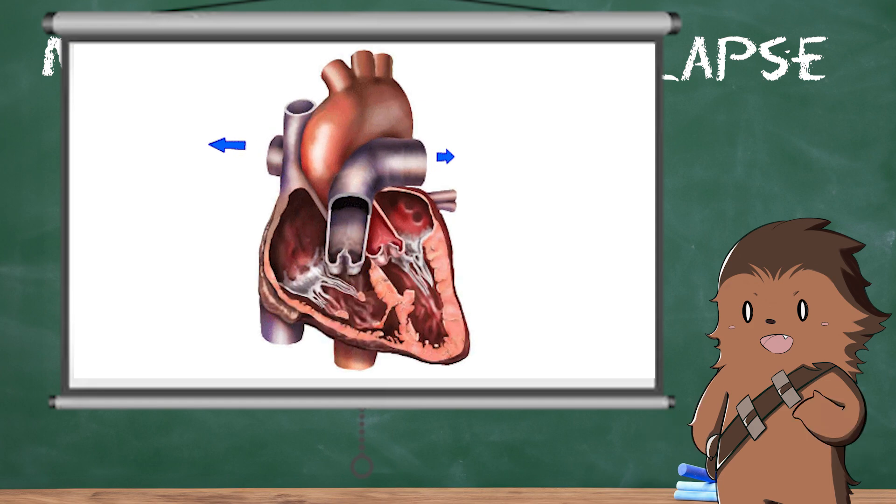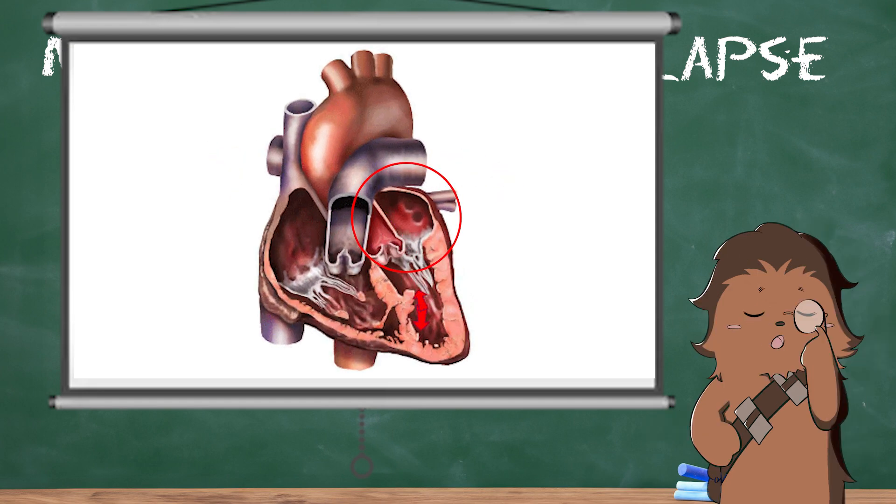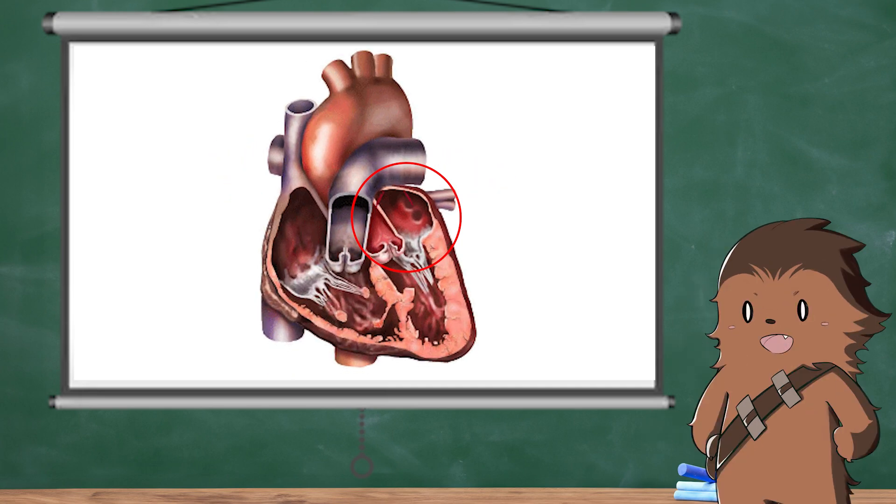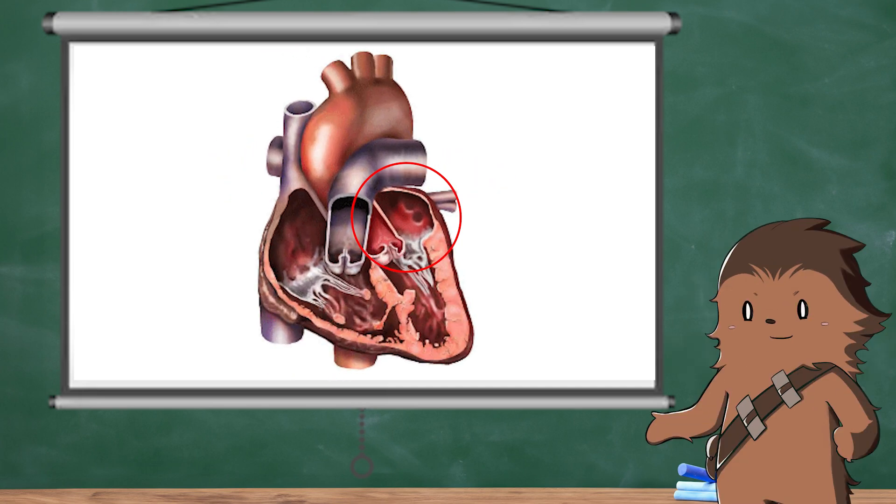Your mitral valve is the door that connects your left atrium with your left ventricle. These are two chambers of your heart responsible for collecting oxygen-rich blood from your lungs and then pumping it out to your body.